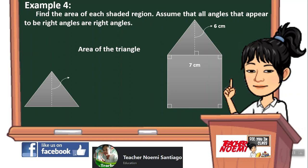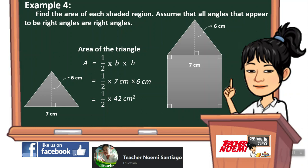Area of triangle: the height is 6 centimeters and the base is 7 centimeters. The formula for the area of a triangle is one-half times base times height, which equals one-half times 7 centimeters times 6 centimeters, equals one-half times 42 square centimeters. The area equals 21 square centimeters.